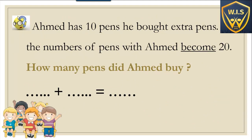Another example: Ahmad has ten pens. He bought extra pens. The number of pens with Ahmad becomes twenty. How many pens did Ahmad pay? Ahmad has ten pens, so we write ten. We leave the space for the unknown. The number of pens becomes twenty, so the sum is twenty.